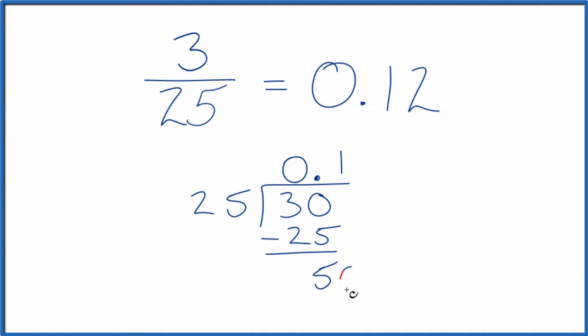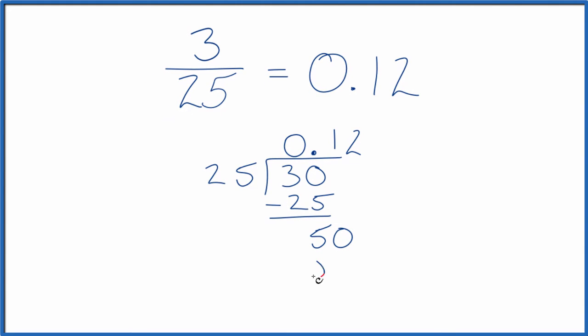Let's make that 50, then we'll move over 1, and 2 times 25, that's 50. Subtract, we get a remainder of 0. So 3 divided by 25 gives us the decimal 0.12.